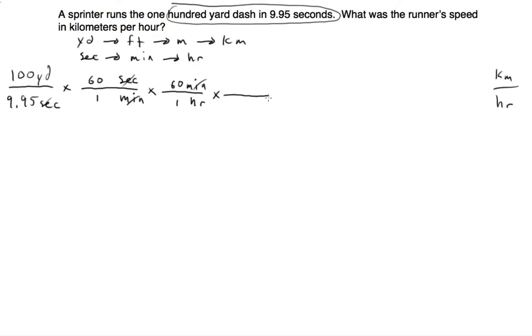So now we can go and change yards. We want those on the bottom across so they will cancel. And then we can put feet up here. We know there's three feet and one yard. And then we're going to take, we want to get rid of feet and get meters. We have a conversion for that. One meter is 3.28 feet.